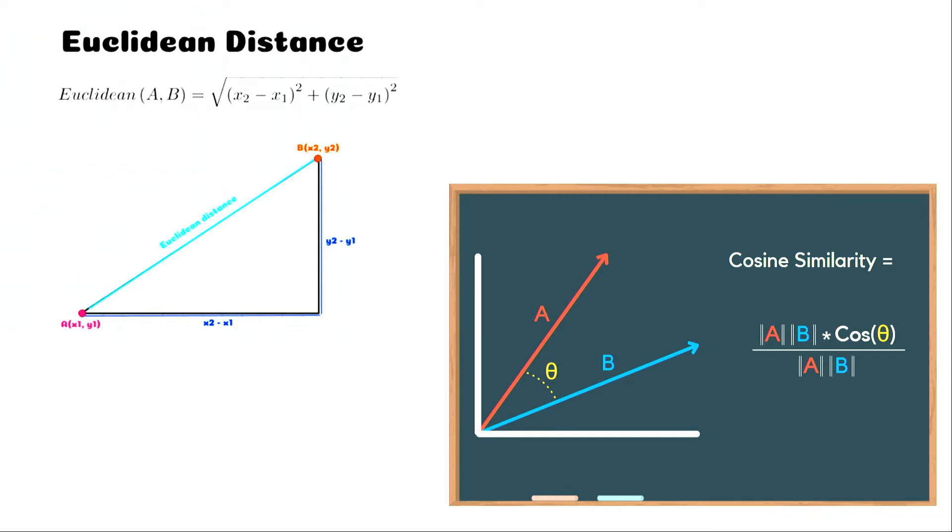Euclidean distance has no concern about the correlation or the angle between two vectors, because Euclidean distance is only about pure distance measurement. Now let's say you are in an e-commerce setting and you want to compare users for product recommendation.